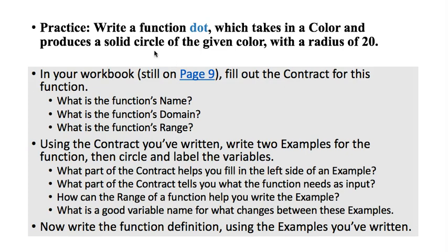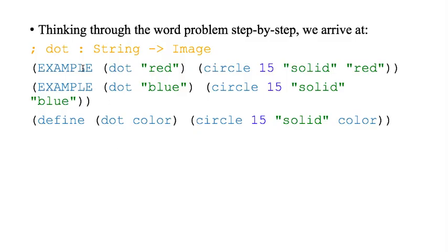Here's the next one. Write a function dot which takes in a color and it's going to produce a solid circle of the given color with a radius of 20. So pause now and do all of these parts on page nine. Did yours look something like this? It should look something like this. Takes in a string, which is the color. Produces an image. The radius was always 15. The thing that changed was the color.